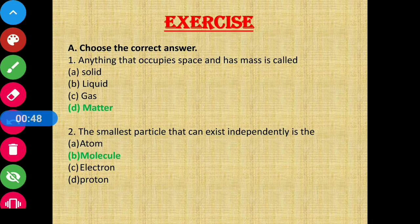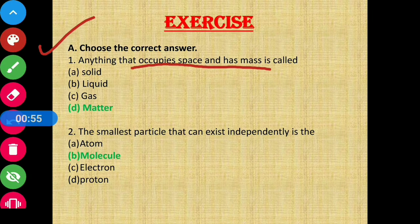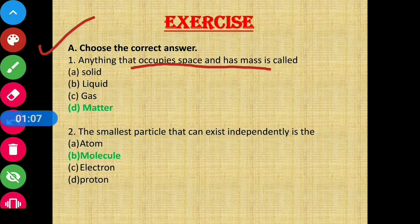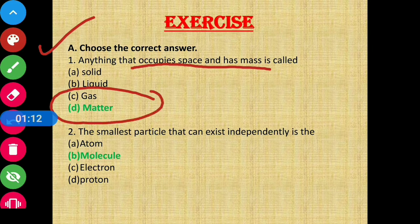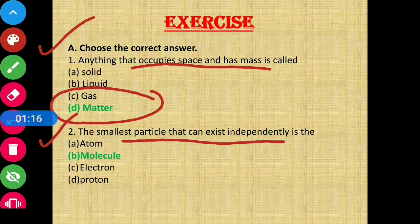Section A: Choose the correct answer. Question number 1 - anything that occupies space and has mass is called what? कोई भी चीज़ जो एक space occupy कर रही है और उसमें कुछ mass है, उन सब चीज़ों को क्या कहा जाता है? The answer is option D - matter.